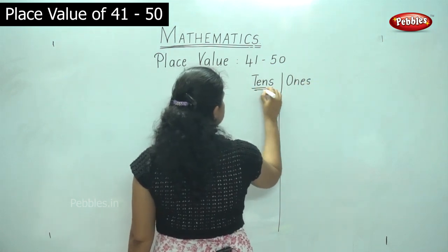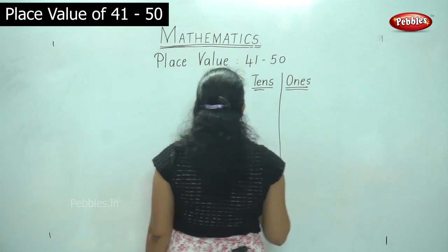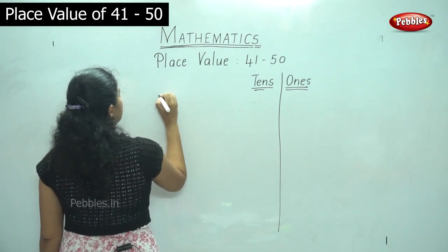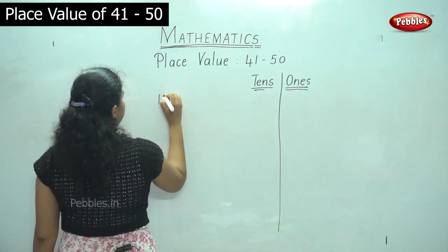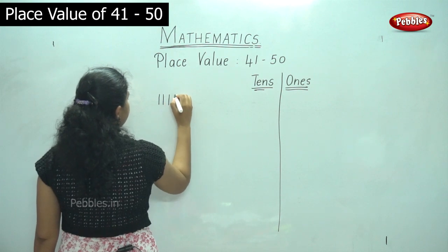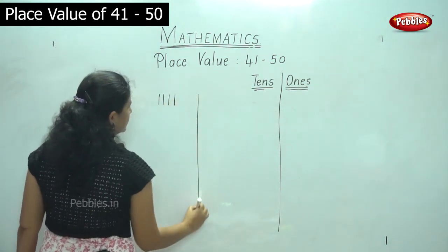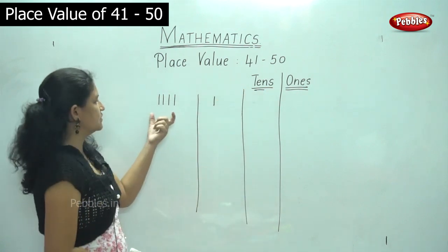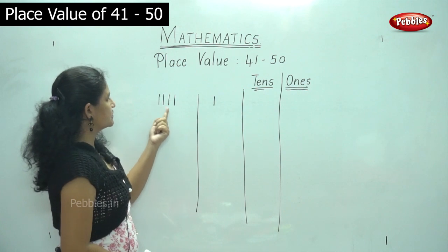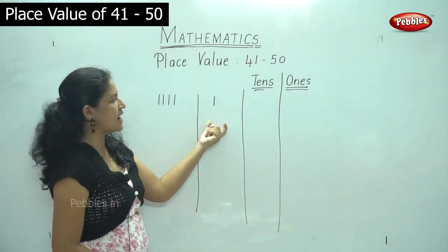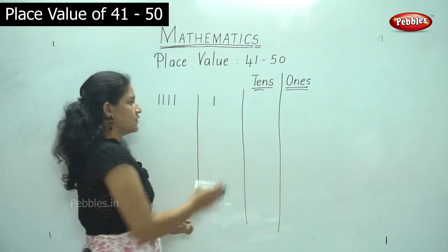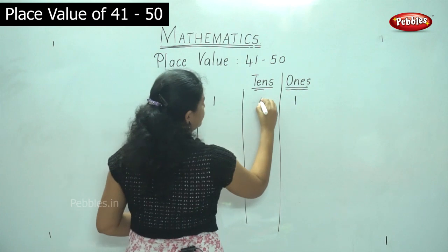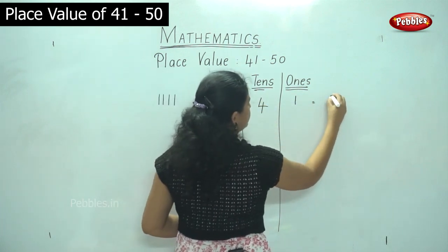We have the tens house and the ones house. Now we will group the numbers. In the tens house I have 4 tens — 1, 2, 3, 4 — and in the ones house I have 1. So 4 tens and 1 one gives me the number 41.